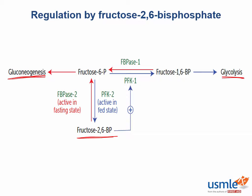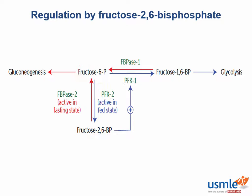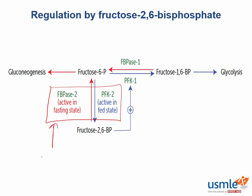Fructose 2,6-bisphosphate is formed by phosphofructokinase II when fructose 6-phosphate gets converted to fructose 2,6-bisphosphate. The reverse reaction can also take place, where fructose 2,6-bisphosphate is acted on by fructose bisphosphatase II to form fructose 6-phosphate. An important point to remember is that fructose bisphosphatase II as well as phosphofructokinase II are actually part of the same protein, but they respond in opposite ways to phosphorylation by protein kinase A.